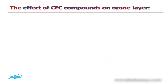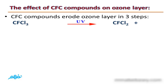What is the effect of CFC compounds on the ozone layer? CFC compounds erode the ozone layer in three steps. The chemical formula for CFC compounds is CFCl3. With the help of ultraviolet radiation, this chlorofluorocarbon is broken into CFCl2 plus a free chlorine atom.